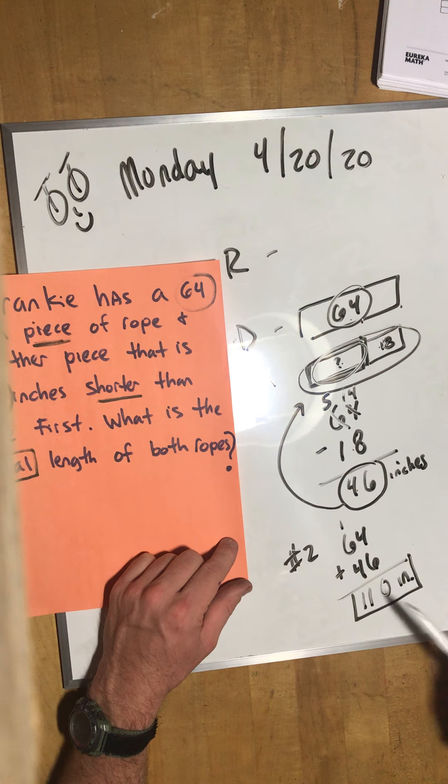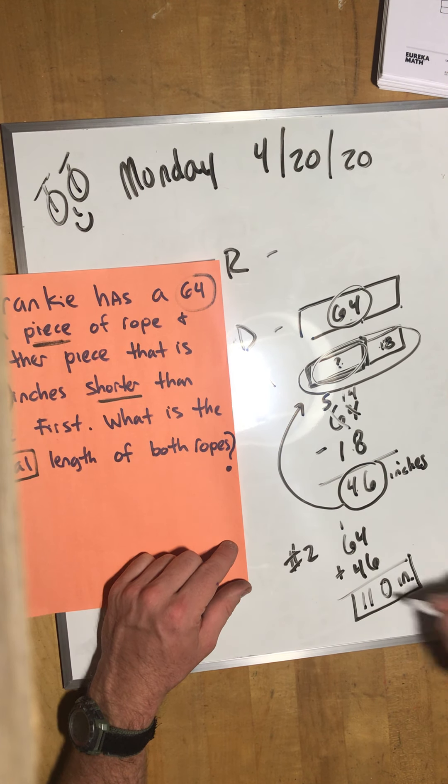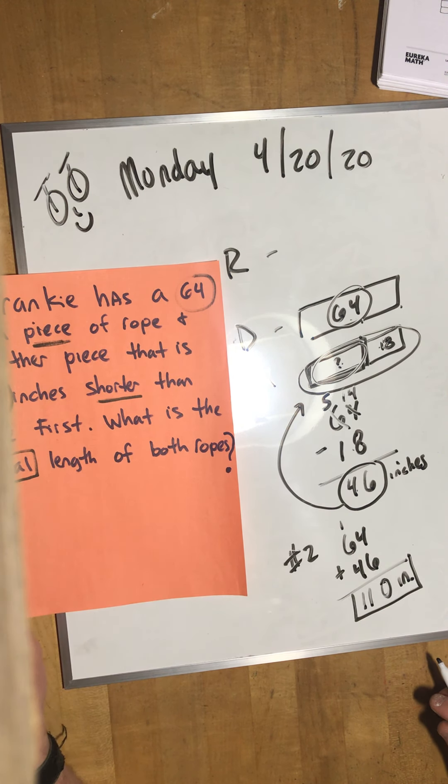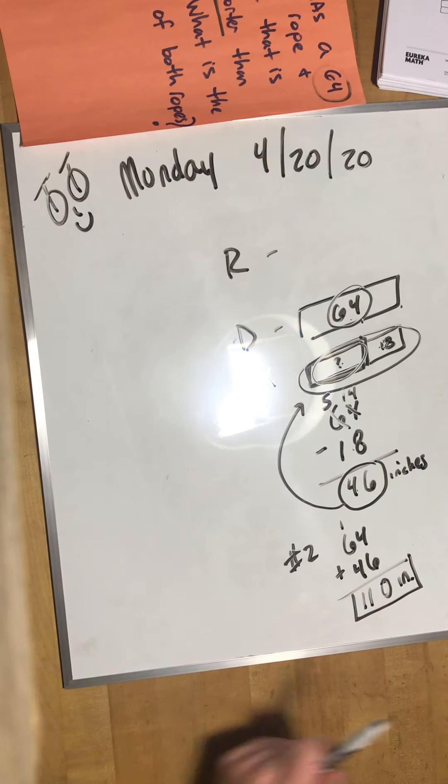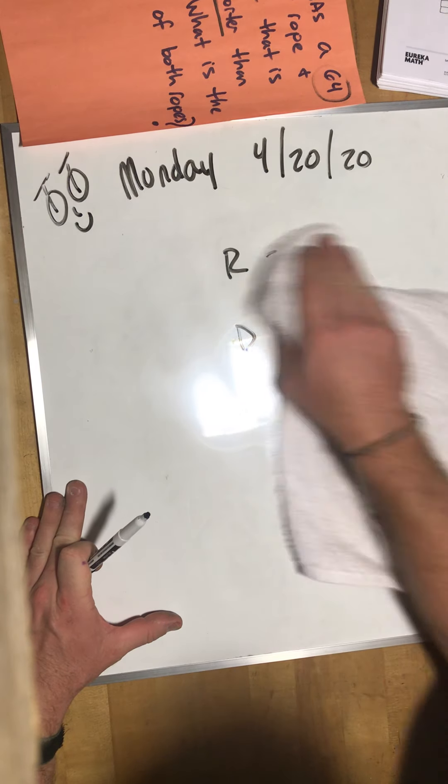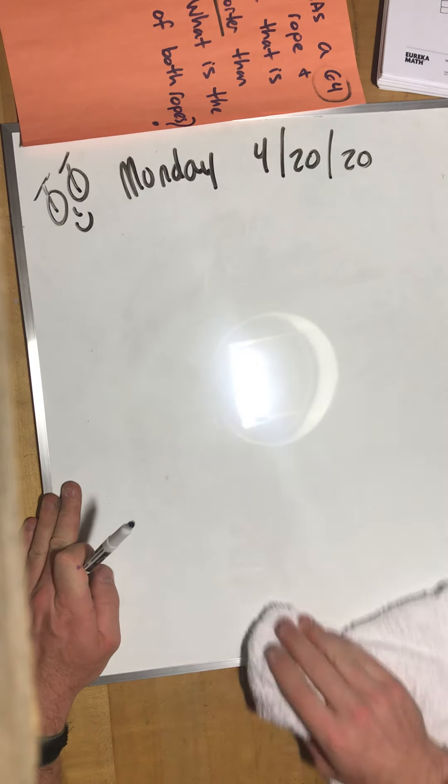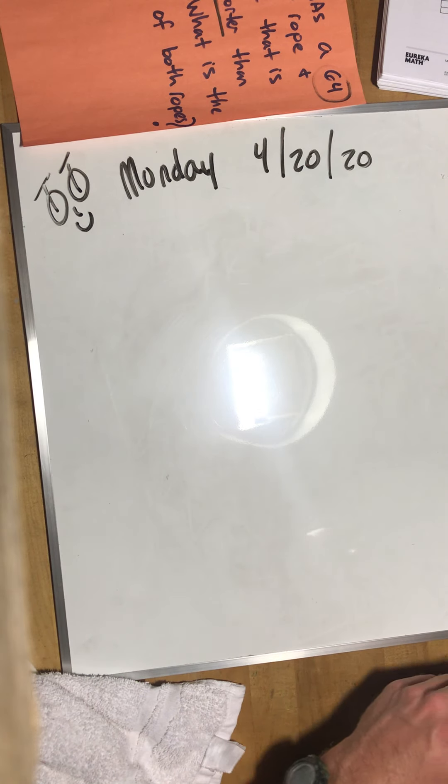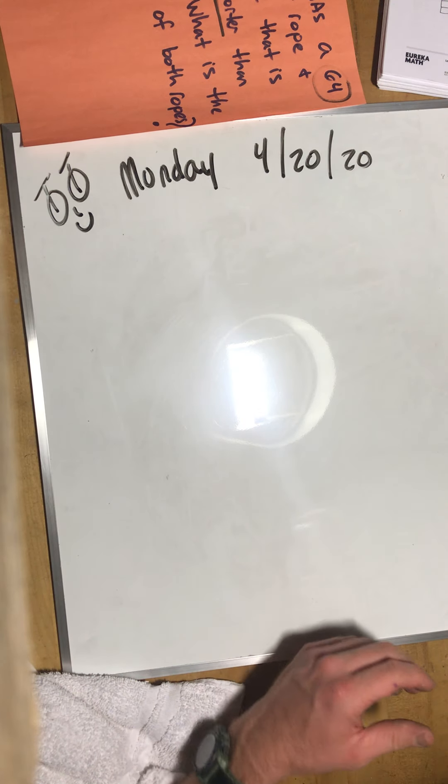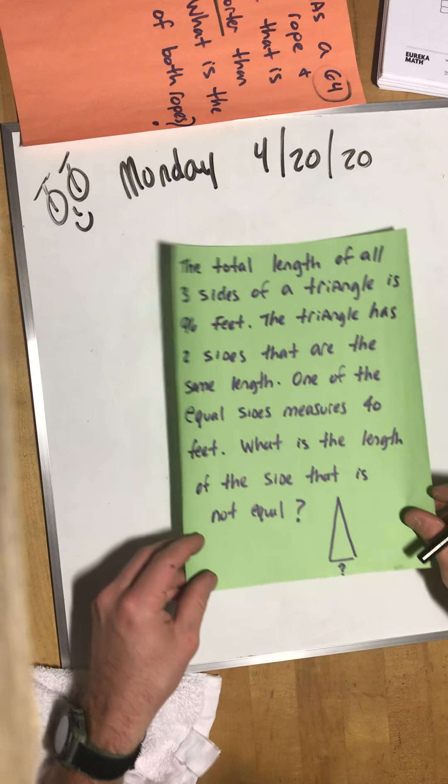This is what I drew, 18 inches shorter. That was what we were looking for. To figure that out, 64 minus 18 to give us this length, 46 inches. But we needed the total of both, so 64 plus 46 equals 110 inches. Boom! Let's move on. Slide this away.